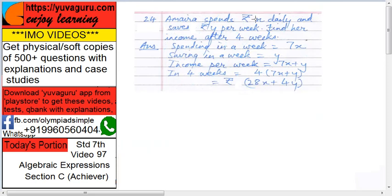Amaira spends Rs.x daily and saves Rs.y per week. Find her income after 4 weeks. Here spending is daily and saving is weekly, so you have to bring everything to a common term.